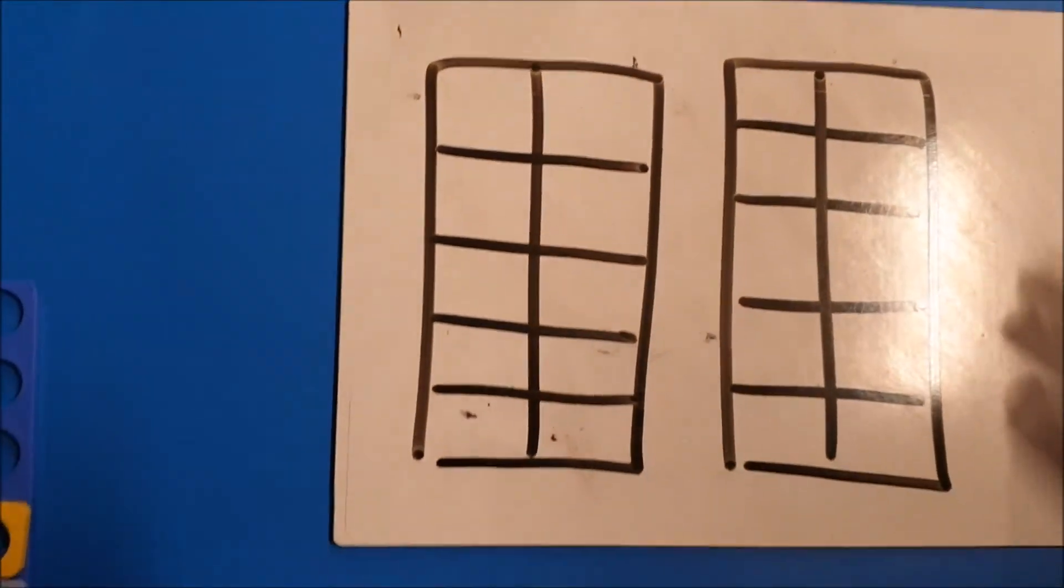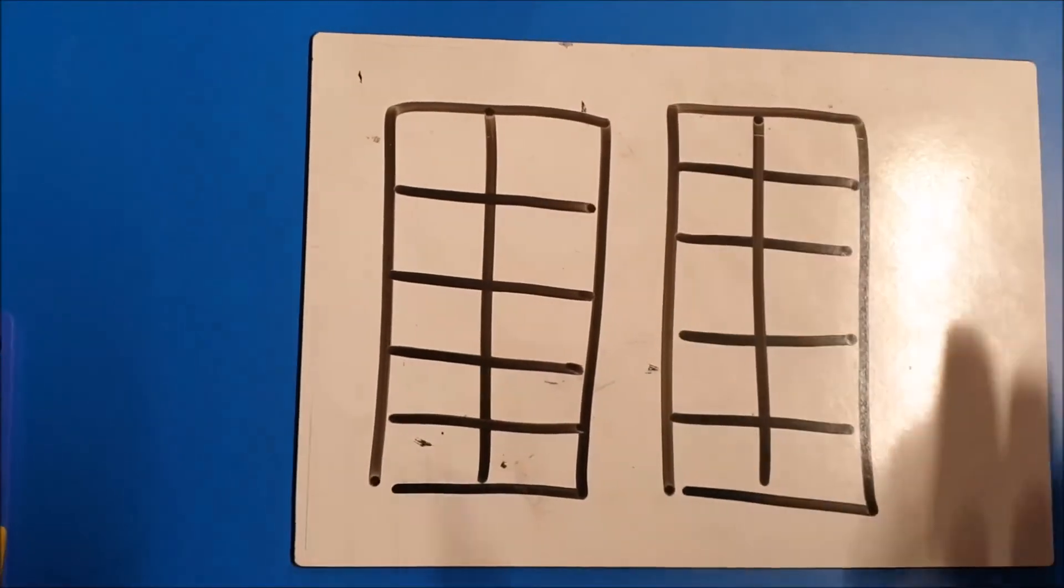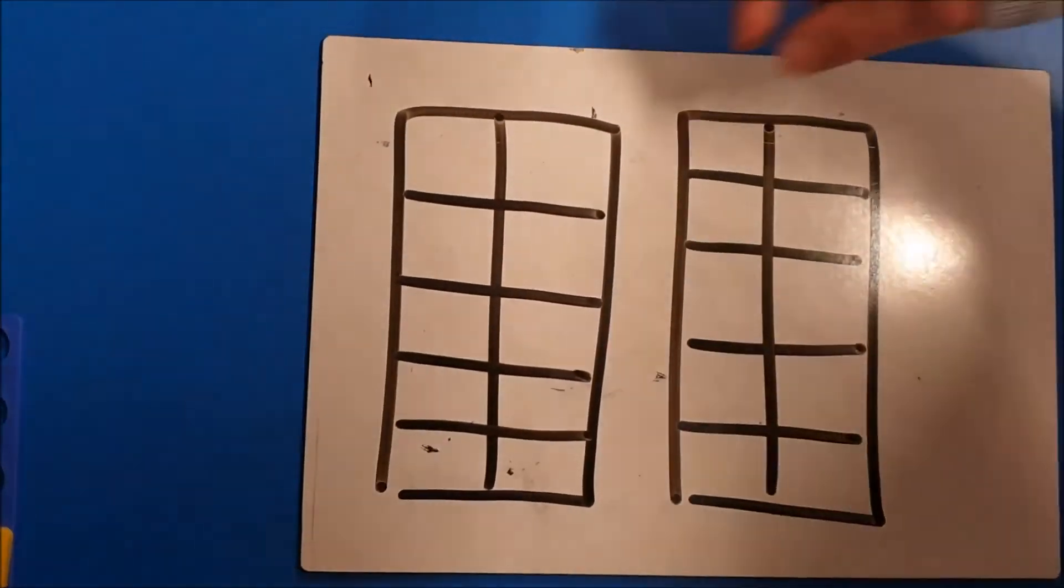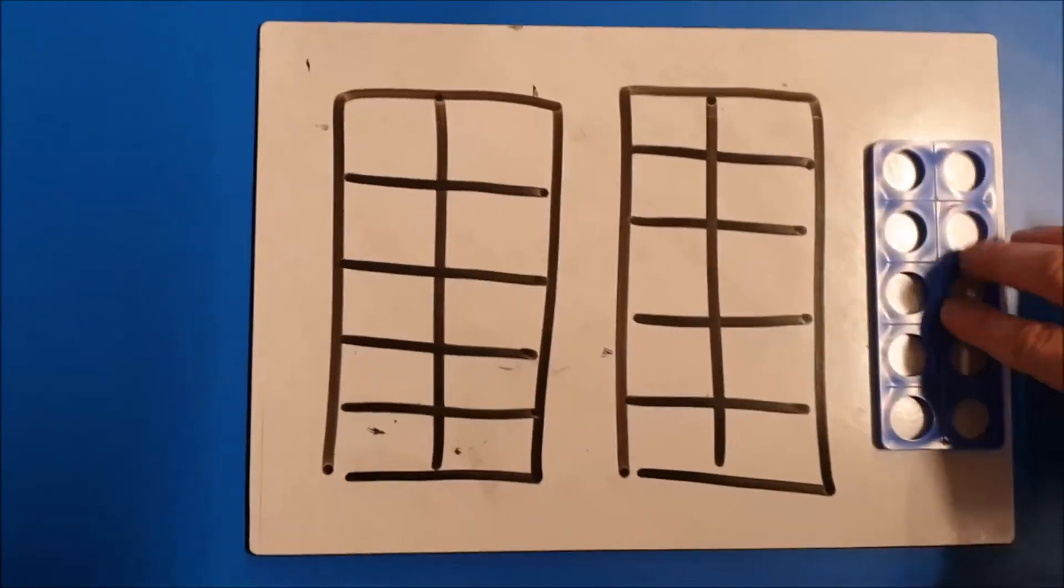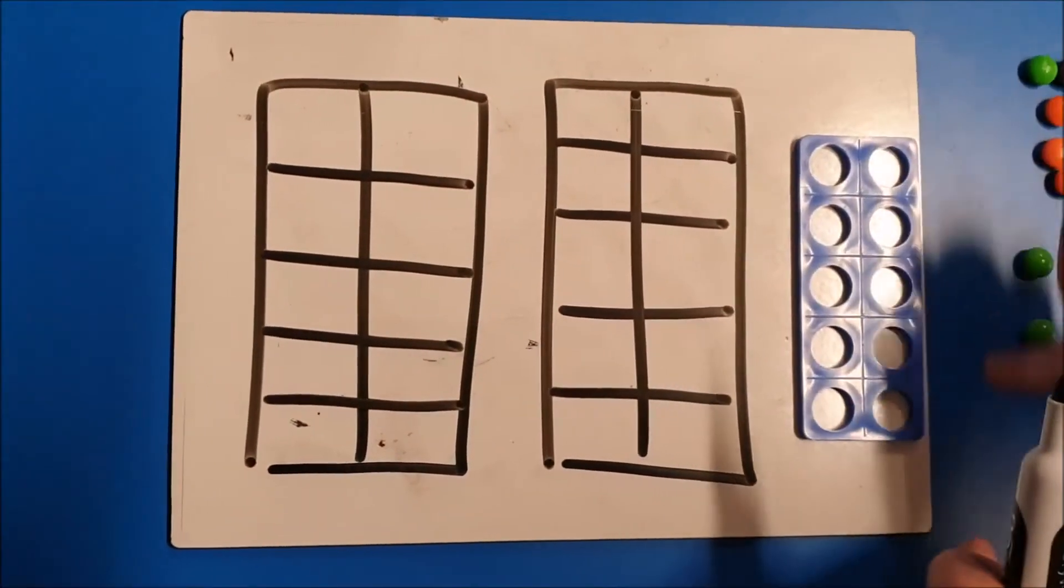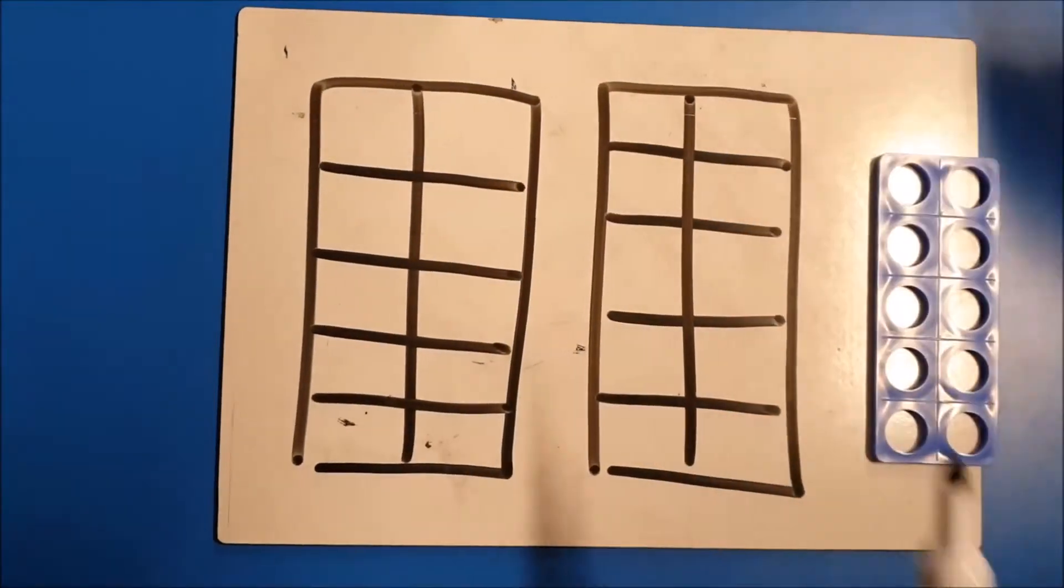And then for a child to represent this a different way, or start to become more confident with not having to use concrete equipment, we might encourage them to use pictorial using a 10s frame. This is exactly the same as using base 10 and Numicon, but rather we draw it.